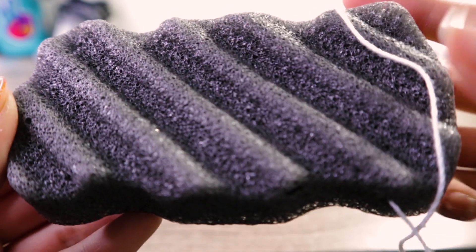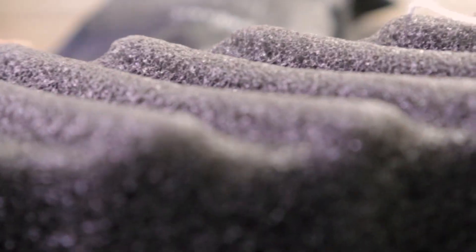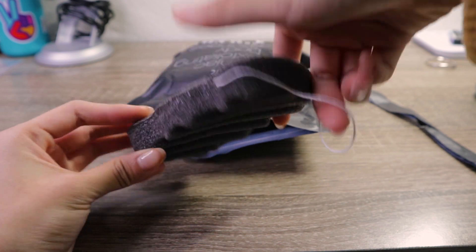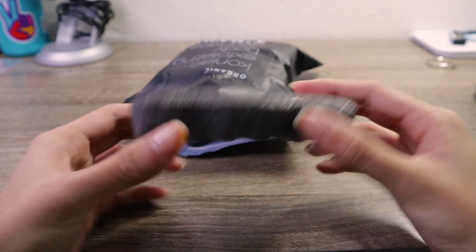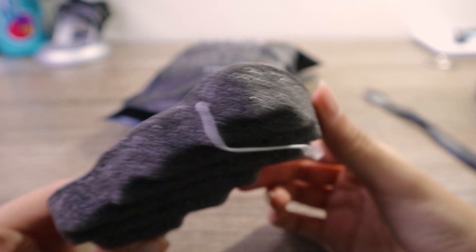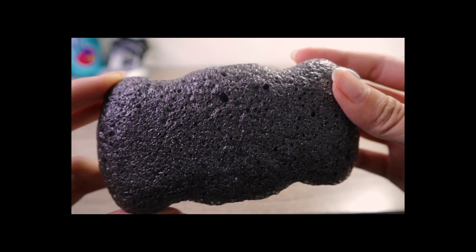So once you open the bag up, the sponges are kind of hard. I figured they'd be like dishwashing sponges and they'd be still squishy, and then they'd become more squishy when wet. But no, these are like rock solid, hard rock.